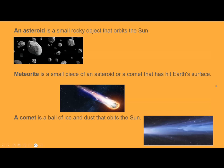An asteroid is a small rocky object that orbits the sun. A meteor is a small piece of an asteroid that hits Earth's surface. And a comet is a ball of ice and dust that orbits the sun.